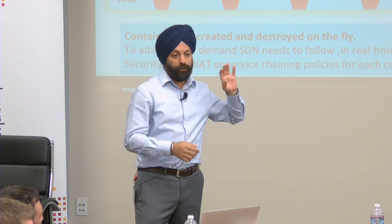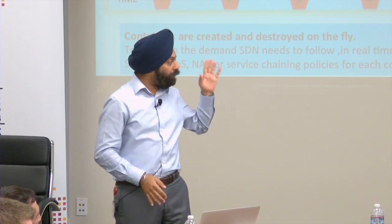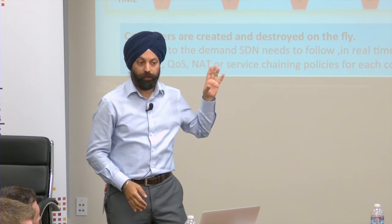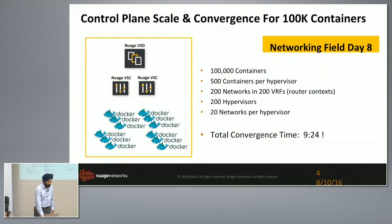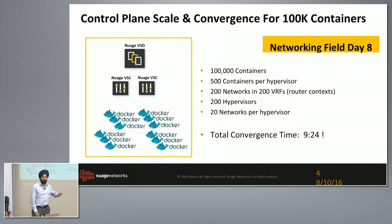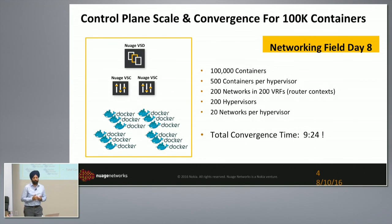Combine those two factors: high scale and a high level of entropy in the system. You clearly need your networking layer to be able to cope. Sunil touched on this briefly in our NFT8 talk two years ago, where we showed 100,000 containers coming up in less than 10 minutes. The key takeaway was that it demonstrated the scalability of our control plane — you need a control plane that can keep up with that kind of environment.